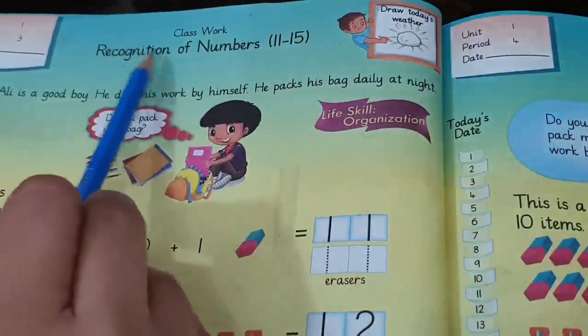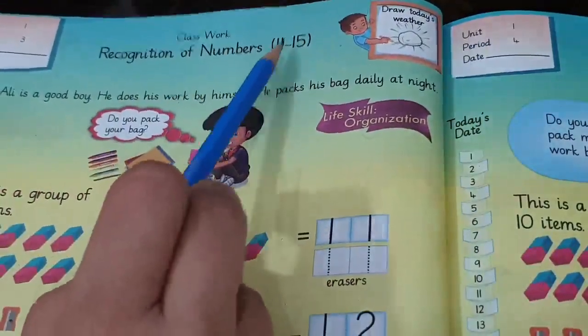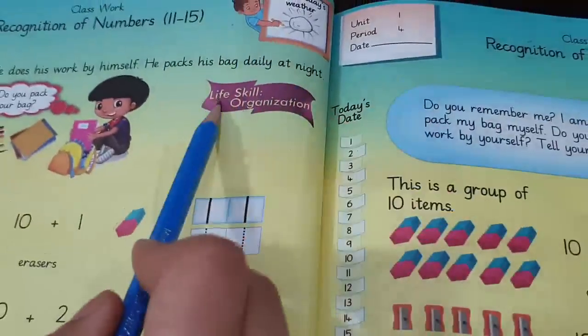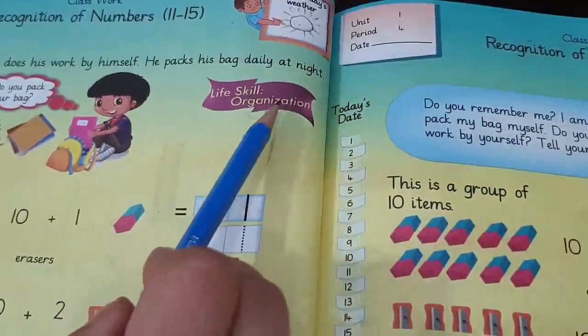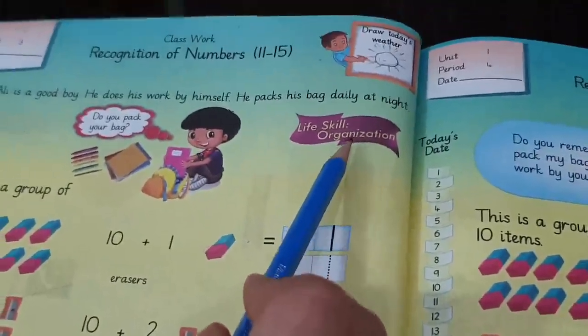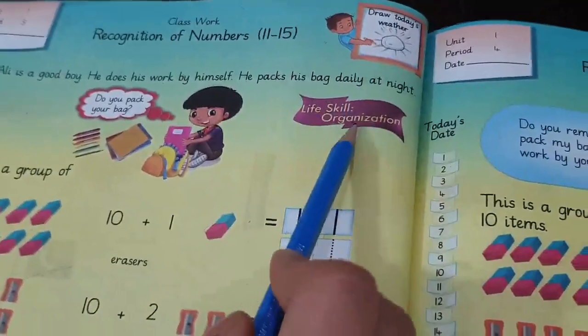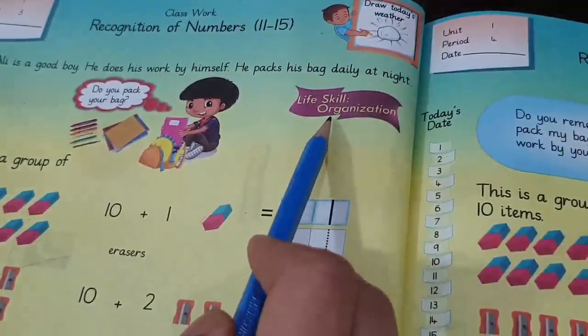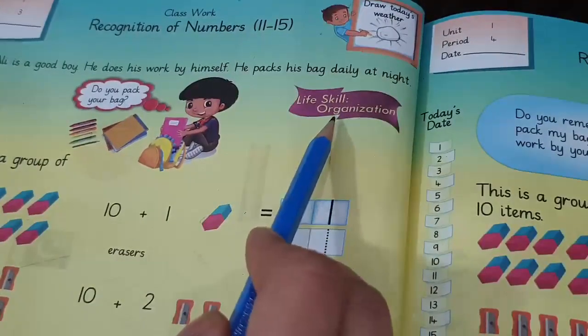Our today's topic is recognition of numbers 11 to 15. Okay, beta. First of all, look here. Our today's life skill is organization. Do you have an idea about organization? Let me tell you. Beta, organization means keeping your things organized, assembling and arranging everything properly.